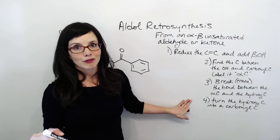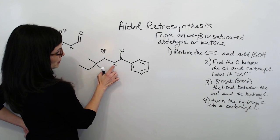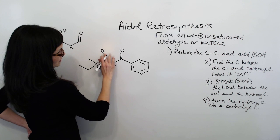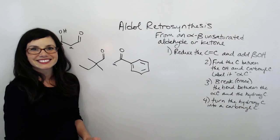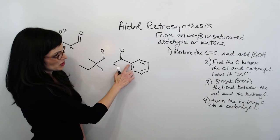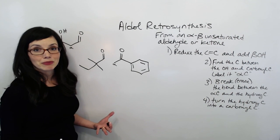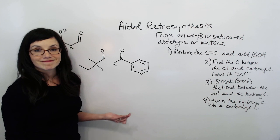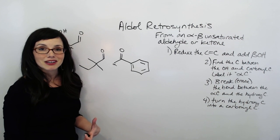Then these steps are exactly like what we've been doing. We're going to find the carbon between the OH and carbonyl and label it alpha, break the bond between the alpha and the hydroxy carbon, then turn the hydroxy group into a carbonyl. Those are our two starting materials. This was a crossed aldol — we have two different reactants. One of them had an alpha carbon, but the other had no alpha carbon that could become an enolate, and the alpha carbon on the first had no protons. So this was perfect for a crossed aldol, and since there was only one possibility, any base would work just fine.